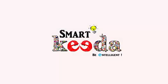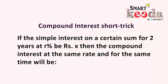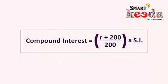Hello friends, today through this very short video I am going to explain a short trick for compound interest related problems, in which the language of the question goes like: if the simple interest on a certain sum for two years at R percent is X rupees, then the compound interest at the same rate and for the same time will be what?